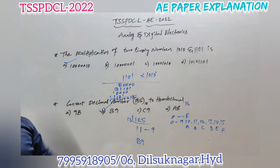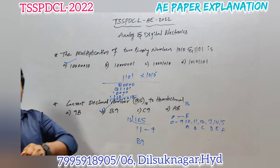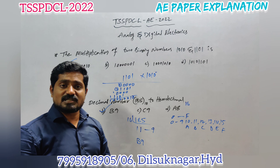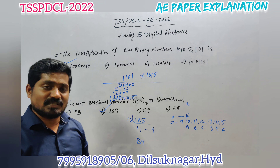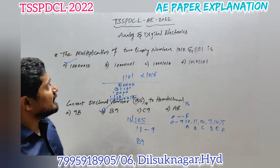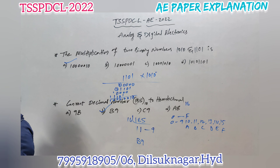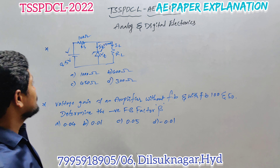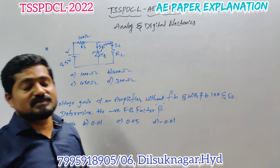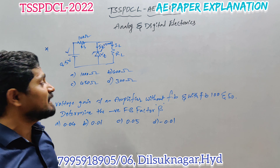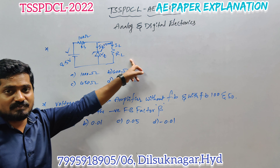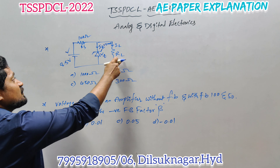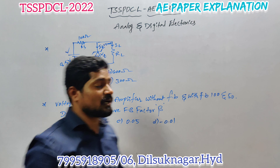All sub-engineering aspirants should try to prepare beyond these problems — these are from number systems only, but try to prepare other topics in digital electronics as well. Next we will see the analog electronics questions. In analog electronics we got five questions. The first one is from the Zener diode topic — we need to find the minimum resistance value, which we can call the load resistance.